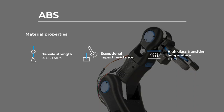ABS boasts impressive mechanical properties making it highly suitable for 3D printing. With a tensile strength ranging from 40 to 60 megapascals, ABS provides robust structural integrity and durability. Its exceptional impact resistance allows it to withstand high stress situations without fracturing. Moreover, ABS exhibits a high glass transition temperature of around 100 degrees C, making it well suited for applications requiring higher temperature resistance than more entry level filaments such as PLA.